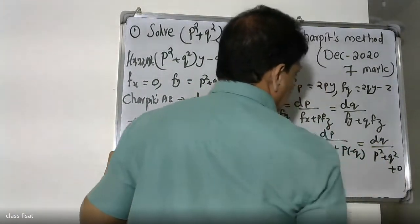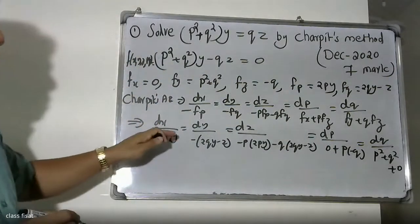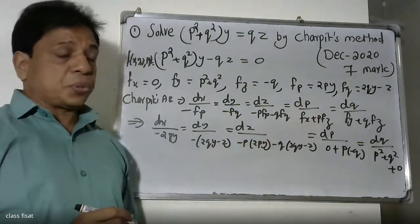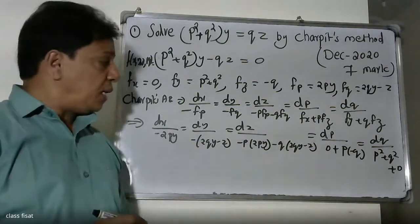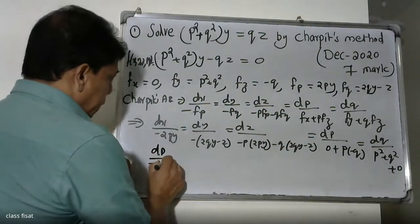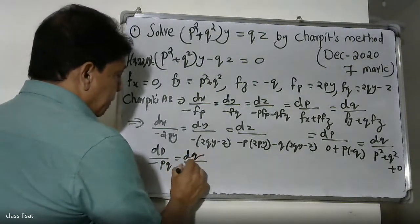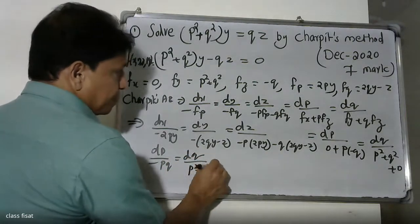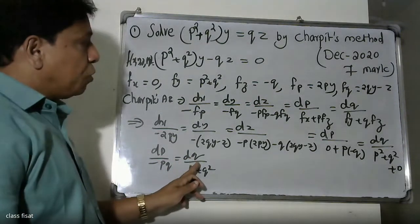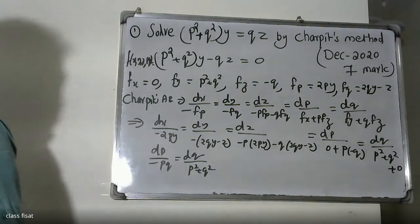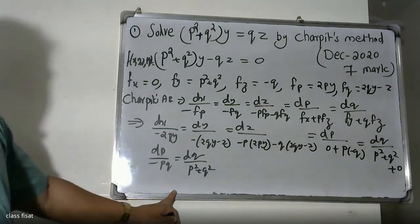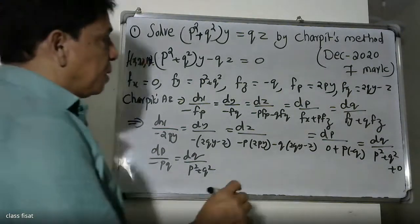After simplification, Fx is zero, so dp equals zero. The relevant ratio reduces to: dp over minus pq equals dq over p squared plus q squared. We write dp over dp by dq and dq by ratio: dp over minus pq equals dq over p squared plus q squared.